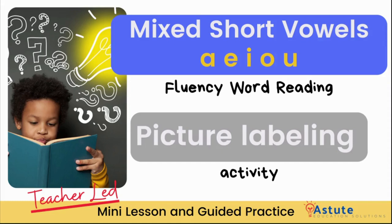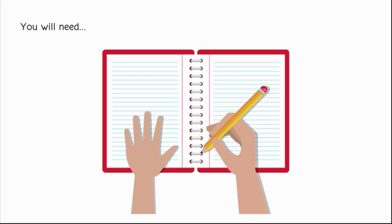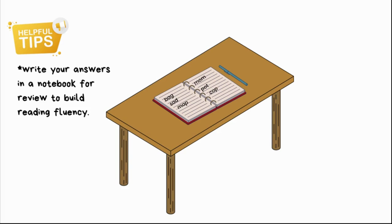Welcome to a teacher-led mini lesson and guided practice by Astute Education Solutions. For this activity you will need paper and pencil. Here's a helpful tip: write your answers in a notebook so that you can go back and review for later to help build your reading fluency.